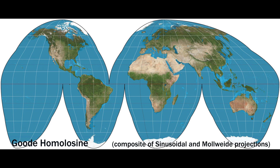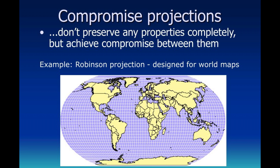The Goode's Homolosine is an equal area map, so each of the landforms shown is the proper size. And because of the interrupted nature of it, the shape of the landforms is less distorted than some others. The last general type of map projection I want to discuss are the compromise ones. These are ones that do not preserve any dimension — so they're not equal area, conformal shape, or equidistant. The idea is to compromise each of the dimensions a little bit to get a more well-rounded map.